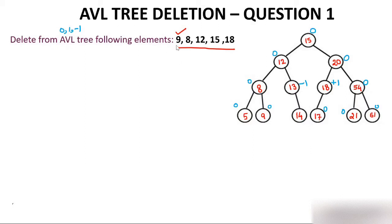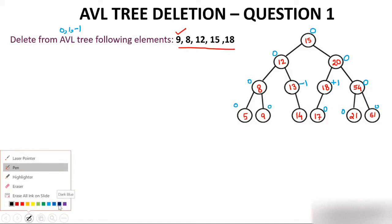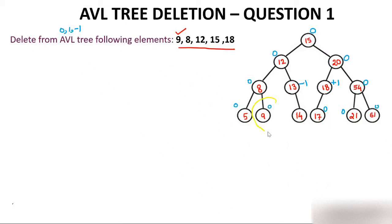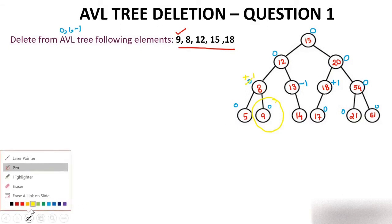Now delete 9. Since 9 is a node having no child — it is a leaf node — just delete it. After deletion of 9, the balance factor of 15 remains 0 since both left and right paths still have length 3. The balance factor of 12 remains 0. But the balance factor of node 8 changes from 0 to plus 1 because 9 is no longer there. Still, every node has balance factor in {0, 1, -1}, so the tree is still an AVL tree after deleting 9.